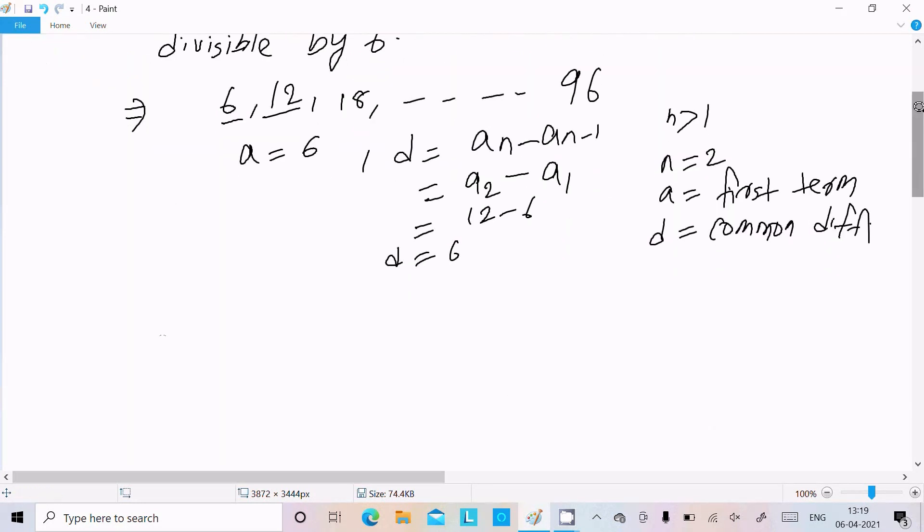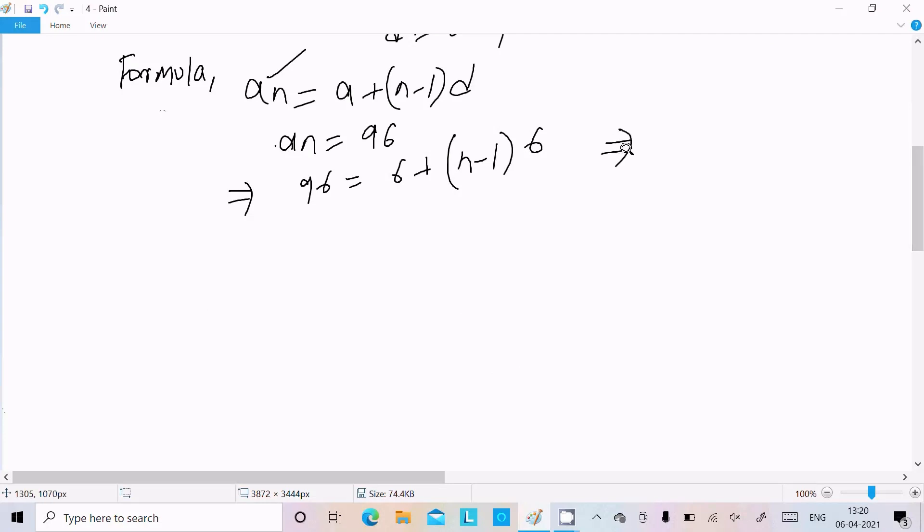Now here, a is the first term, this is the common difference. Now here we know the formula of nth term. So write here nth term formula: an = a + (n-1)d, where n is equal to n equal to, put the value.